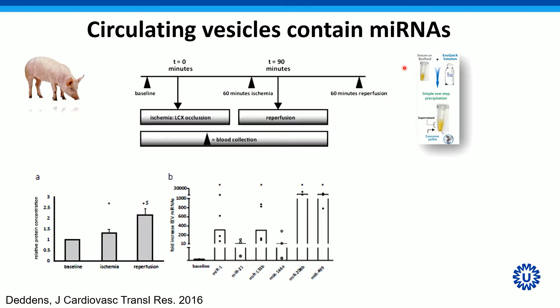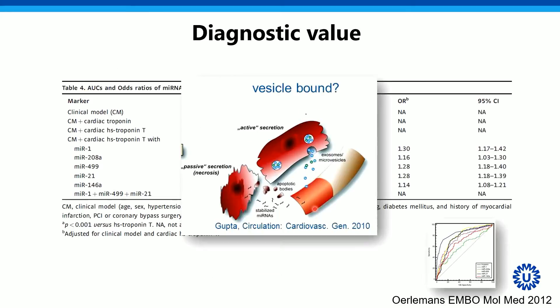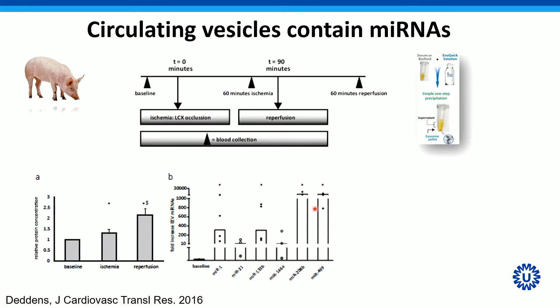If we look at the relative protein we isolate, it always goes up. Of course, you can say these are vesicles, but there's also probably release of cholesterol particles and a lot of other responses happening. But the good thing we saw is that if we look at the different microRNAs in this preparation, the fold increases are massive. Compared to the 10- to 15-fold increases seen directly, if you look at these precipitation methods, the enrichments of these microRNAs are in the 100-fold and 1,000-fold range, which makes it a very sensitive marker.